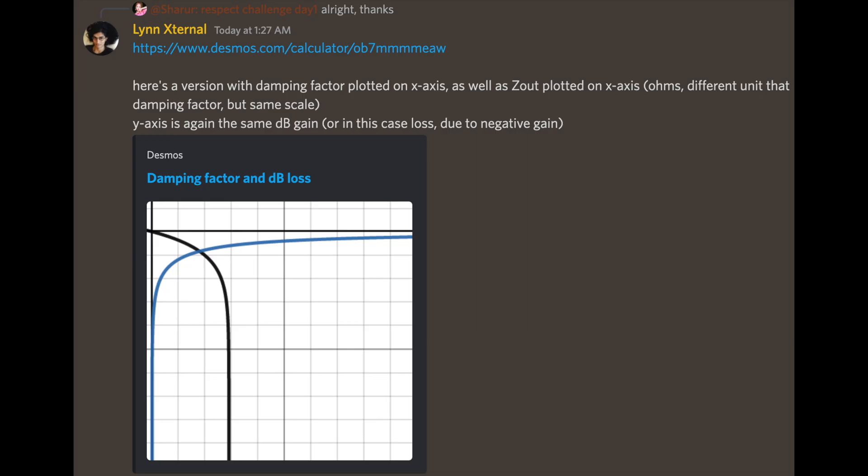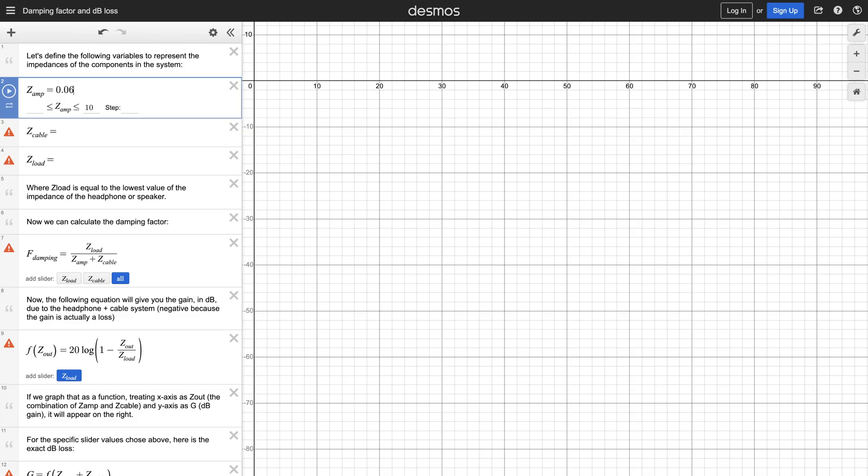Using a model LinExternal kindly created for me to use in this video, I will demonstrate the effects cable impedance has. We are going to use an amplifier output impedance of 0.06 ohms because that is what the output impedance of my amplifier is.